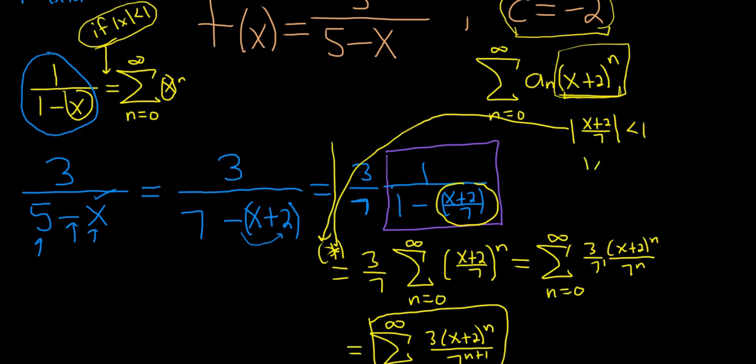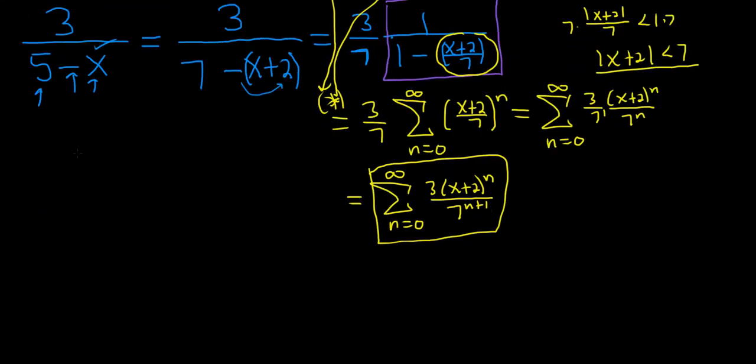So this is actually the absolute value of x plus 2 over 7. Because you can just take the absolute value of the top and the absolute value of the bottom, and the absolute value of 7 is 7. Then you can multiply it by 7. So you get absolute value of x plus 2 less than 7. I ran out of room, so I'm going to come down here.